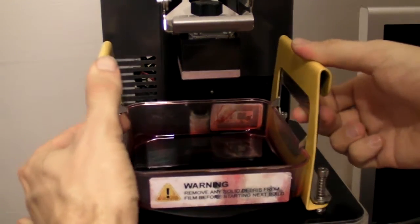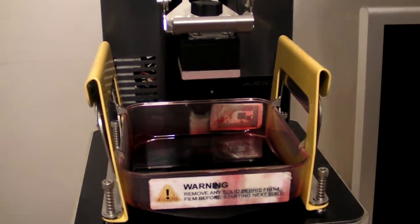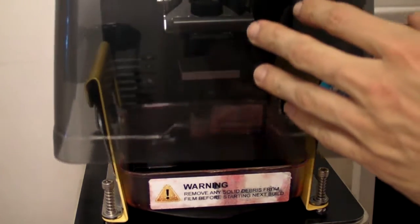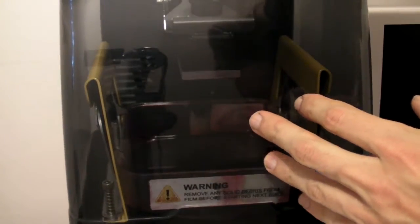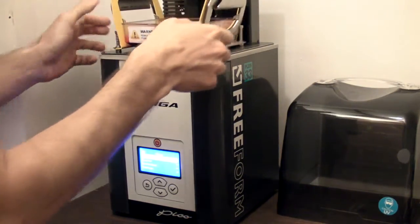One of my favorite things about this printer is the variety of materials you can use with it. Aciga offers their own range of materials from plastic to castable, but you can also use third party materials as well.